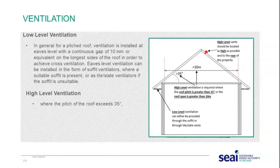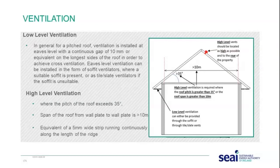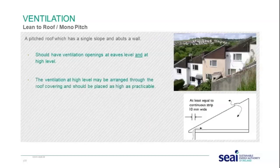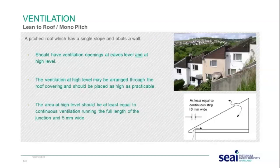For high level ventilation: where the pitch exceeds 35 degrees or the span of the roof from wall plate to wall plate is greater than 10 metres, high level ventilation is required. An equivalent of a 5 millimetre wide strip running continuously along the length of the ridge is required. For a lean-to or mono pitch roof, ventilation openings should be at eaves and high level, with at least two continuous ventilation runs at 5 millimetres wide at the high level junction.